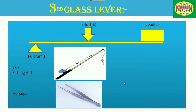Now let us see the third class lever. In a third class lever, the effort is in between the load and the fulcrum. Some examples are fishing rods, tongs, tweezers, forceps and broom.